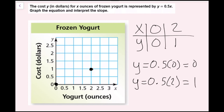That's right here. And now I'm going to draw a ray through this. A ray is just a line that goes on in one direction but not in the other direction. The reason I'm doing that is because it doesn't really make sense in this context to have a negative amount of ounces of frozen yogurt. But if you drew a line, it wouldn't be the end of the world.